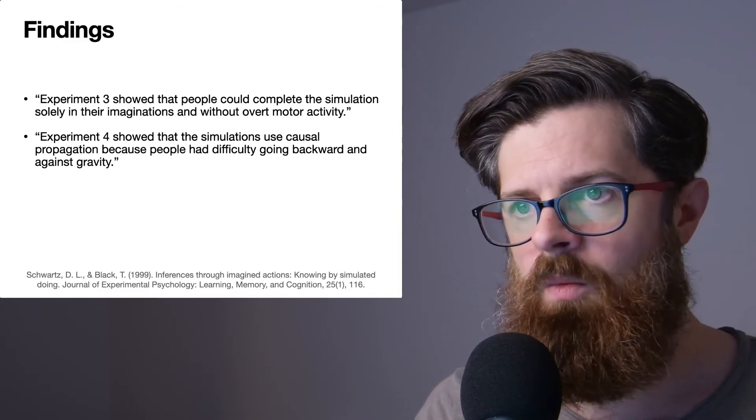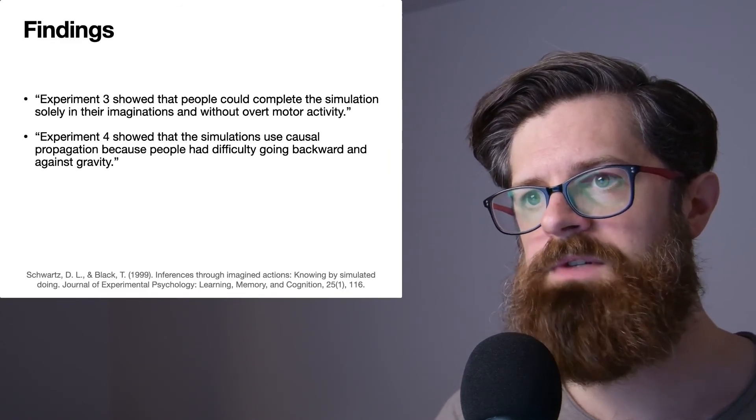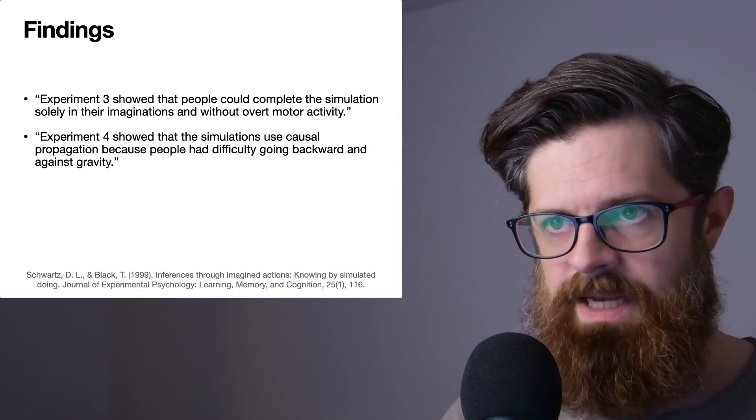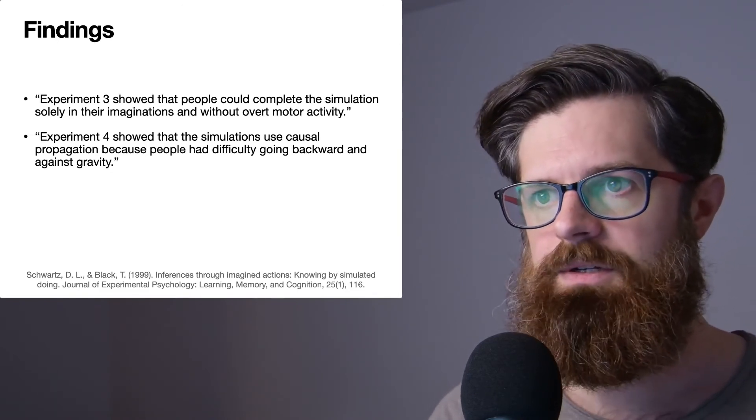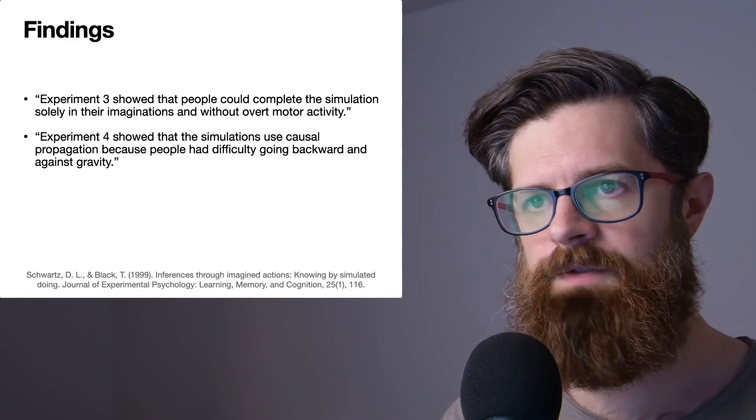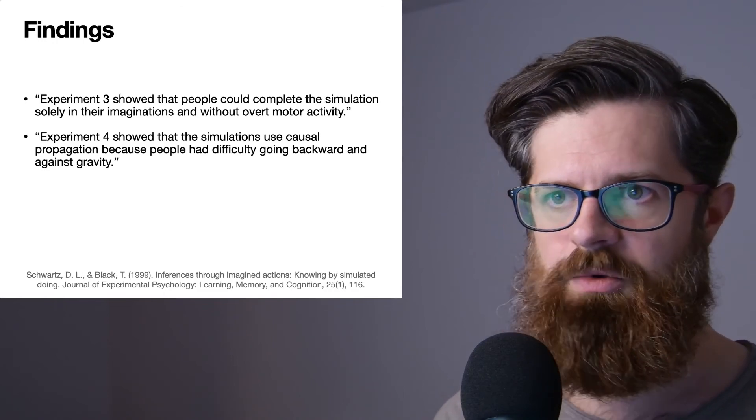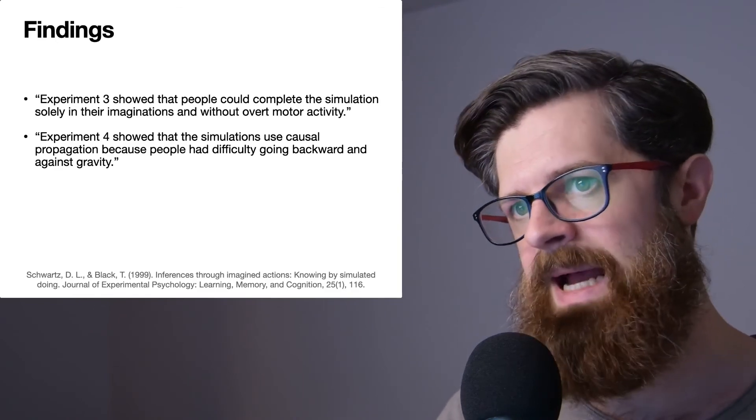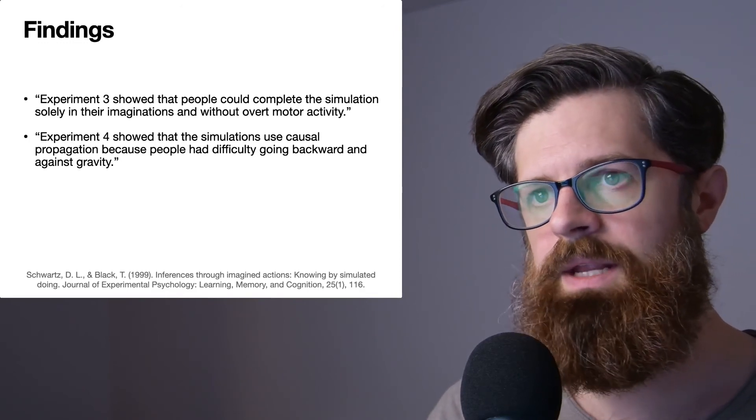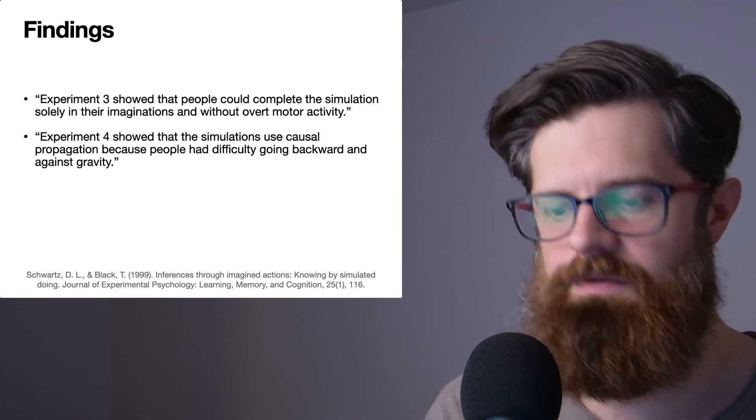Experiment four showed that the simulations use causal propagation because people had difficulty going backwards and against gravity. So this is a really interesting one. One of the ideas of mental simulation is that you're using your knowledge about how the world changes from one moment to the next, which you could call intuitive physics. And one of the things about that is that, well, time goes forwards. And so this kind of fits with the idea of using like an internal physics simulation, because why should you just be able to reverse that backwards in time? For example, maybe you can think and simulate things backwards. Maybe this is doable, but what they're saying is that in this task, people had difficulty when the task involved like counterintuitive physics.